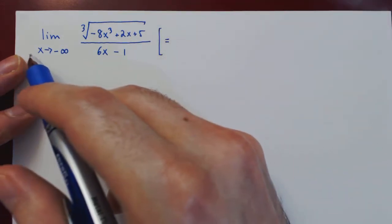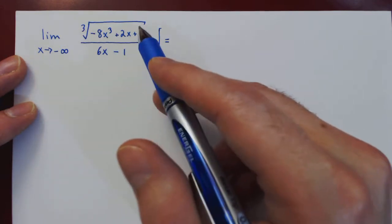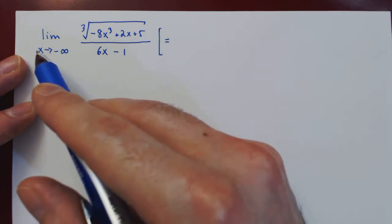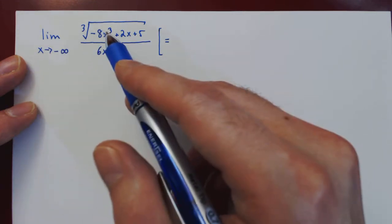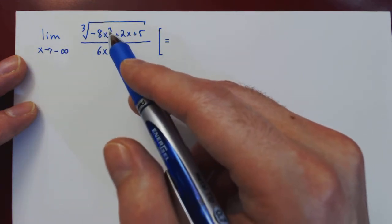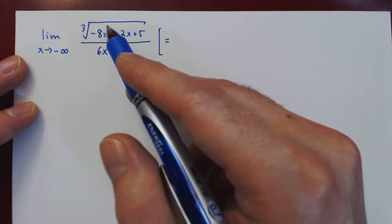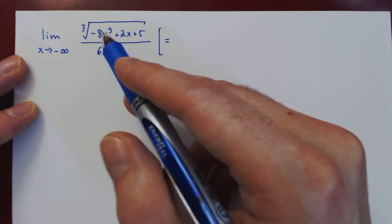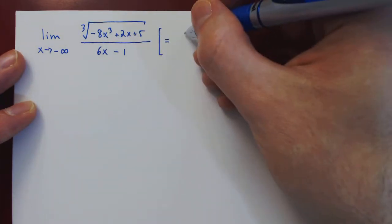As x goes to negative infinity, if we look inside the cube root, the largest term is negative 8x cubed. As x goes to negative infinity, x cubed goes to negative infinity, but then times negative 8 makes it go to positive infinity, and the cube root of positive infinity is also positive infinity.